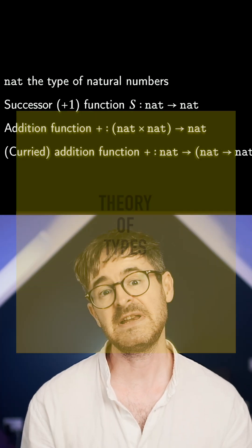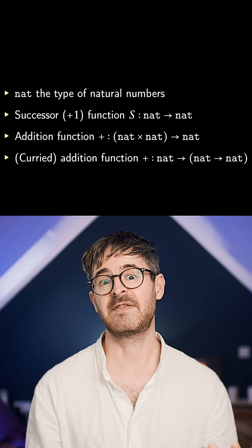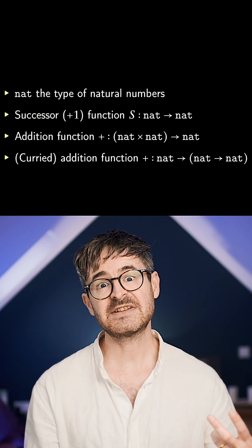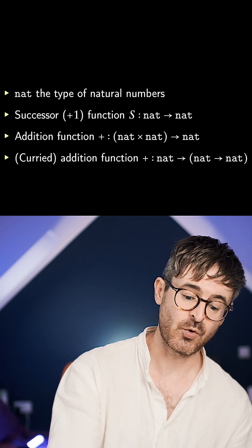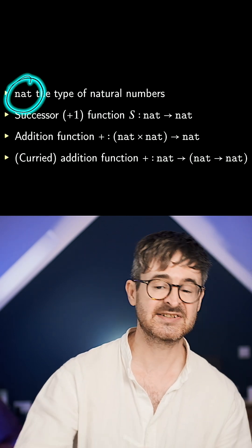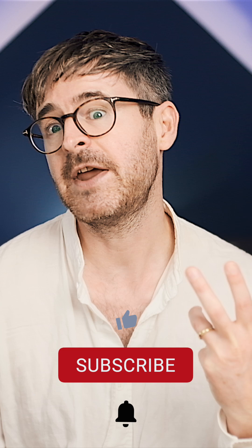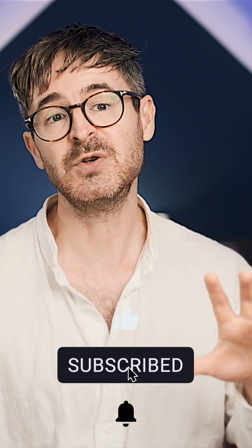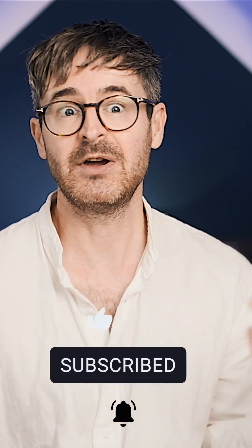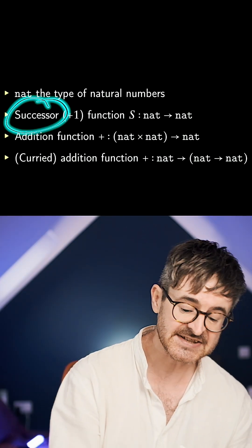Here's a really simple example from basic arithmetic. Let's talk about the natural numbers — call that nat. Zero, one, two. Now think of the kind of functions that we can do on those objects. So we've got the successor function,